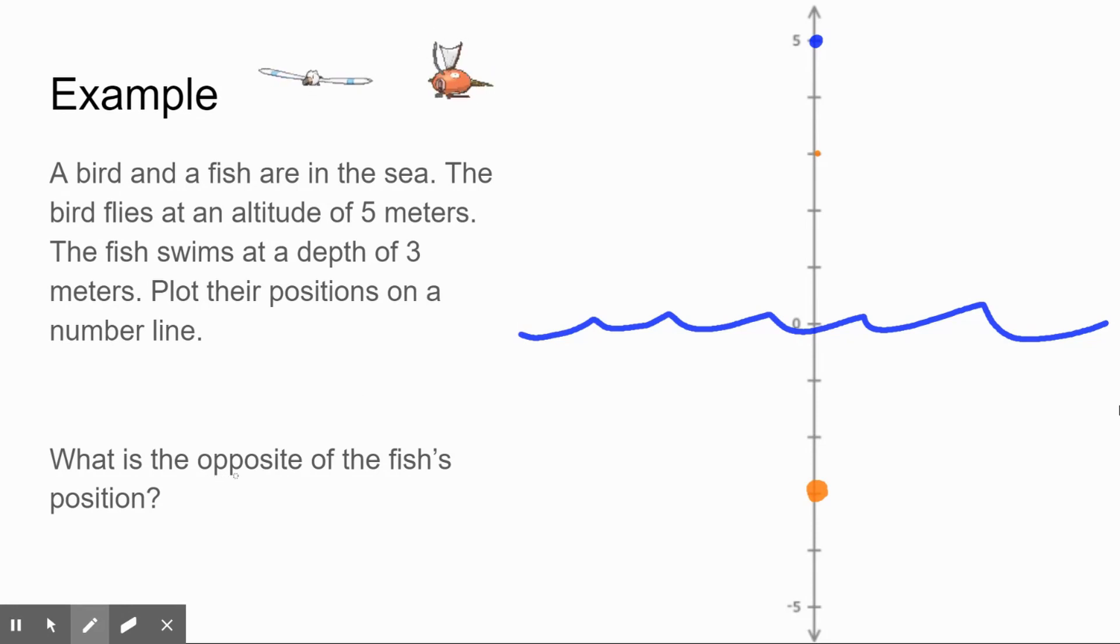As for finding the opposites, if we think about the opposite of the fish's position, we know that it is a distance of one, two, three from zero. So to find its opposite, we're going to continue going the other direction. And would you look at that, it's right where three would be on our number line. So the opposite of the fish's position would be three meters.